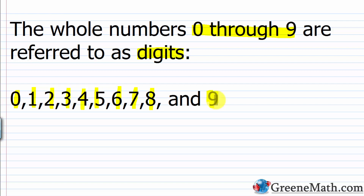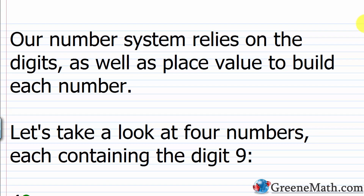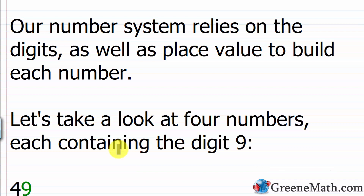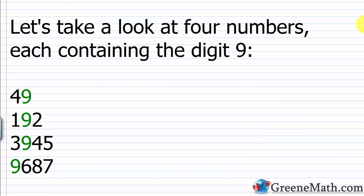The key is that as we change a digit's position in a number, its value changes. Our number system relies on the digits as well as place value to build each number. We're going to look at four numbers each containing the digit 9, and we'll see that as the 9 is in a different position in each number, it gets a different value — that's why we have a place value system.